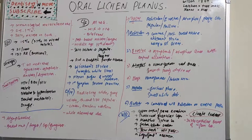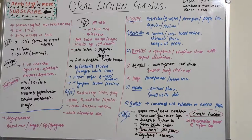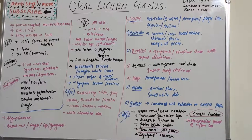By definition, oral lichen planus is a common chronic immunological mucocutaneous disorder of stratified squamous epithelium. The exact etiology is unknown, but the most accepted current data suggests it is a T-cell mediated inflammatory disease in which cytokine production leads to apoptosis — that is, cell death. Other theories include a weak association between HLA antigens and lichen planus.